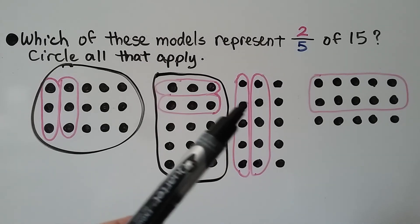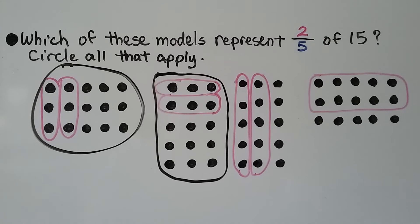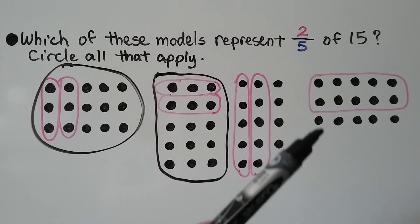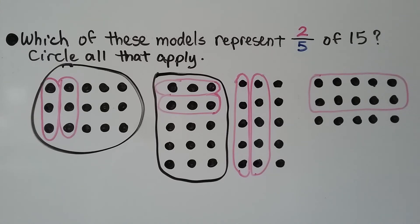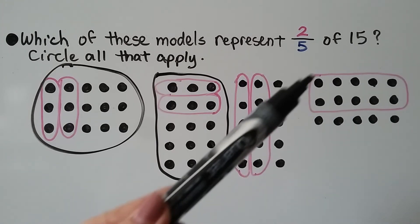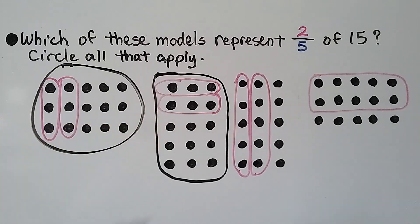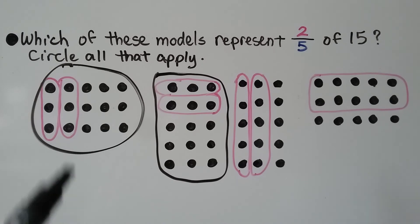The third model has five rows with three in each row — fifteen in all — and two columns are circled. But is that two of five? No. This is two columns out of three that are circled, so that doesn't represent two-fifths. The fourth model also has fifteen counters with two of the rows circled, but this represents two of three — two-thirds of fifteen. So the first model and second model represent two-fifths of fifteen.